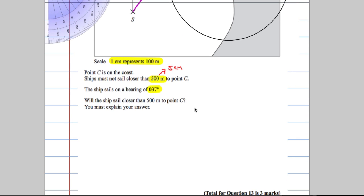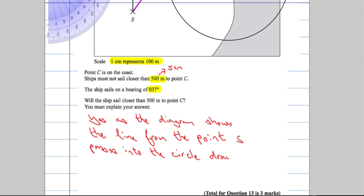Okay, so will the ship sail closer than 500 meters to point C? Yes, as the diagram shows. The line from the point S passes into the circle drawn from the coast C. That should be enough to get your full marks there.